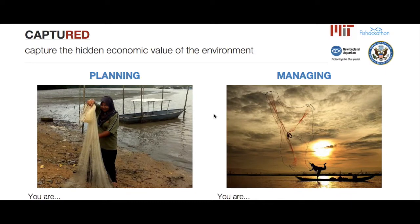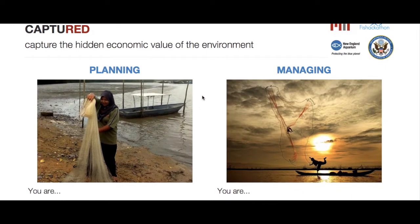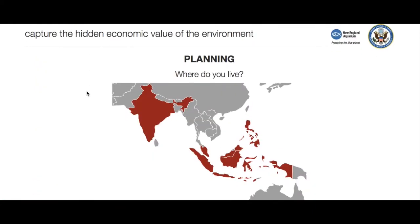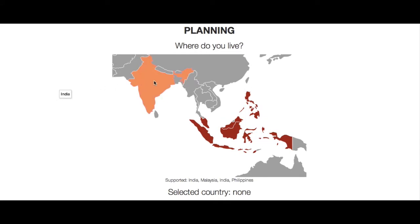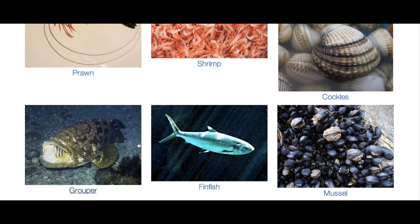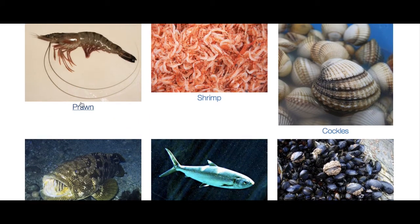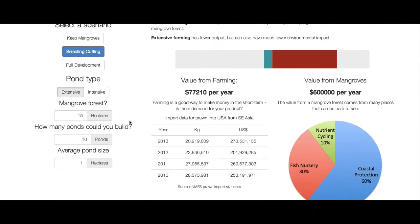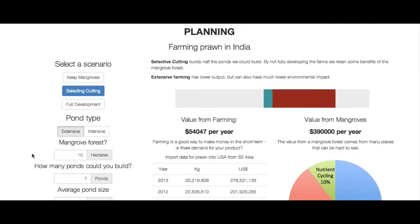Our tool, named Captured, helps communities to make more informed economic decisions about shoreline management after considering a spectrum of aquaculture development scenarios that vary according to size, intensity, choice of farm species, and conservation targets. The name is a play on words between capturing fish, the iconic Rhizophora species of red mangrove that line Southeast Asian coasts, and how we intend to capture the true economic value of coastal ecosystems with our application in order to empower communities.